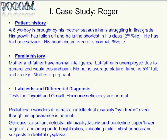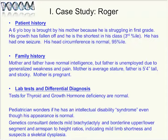The case study is about a kiddo named Roger, a six-year-old boy brought by his mother because he's struggling in first grade. His growth has fallen off and he's the shortest in his class, but just at the borderline third percentile. He's had one seizure early in his life, and his head circumference is normal but at the 95th percentile. His mother and father have normal intelligence by report, but his father is unemployed due to generalized weakness and pain.